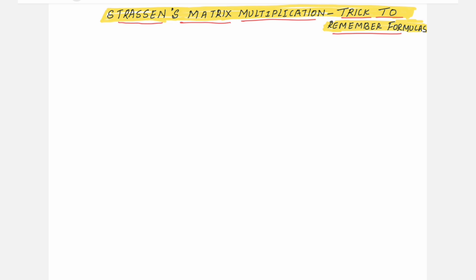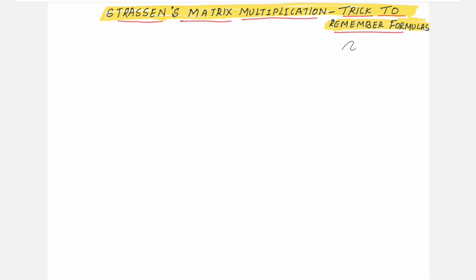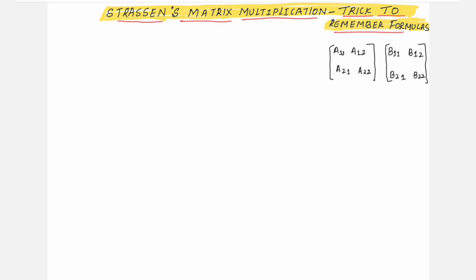To remember this trick, you need to first write down how normally you write the elements of a 2x2 matrix: A11, A12, A21, A22. These are the four elements. And for another matrix, write B11, B12, B21, and B22. First write them simply at one side, then start writing the formula. We have seen in the previous session you have to remember 7 formulas, plus 4 formulas for the final resultant matrix elements C11, C12, C21, and C22. So, 7 plus 4 equals 11 formulas you need to remember.